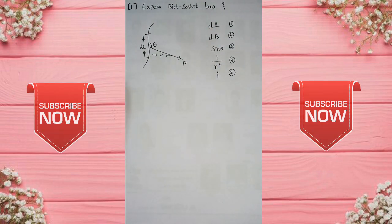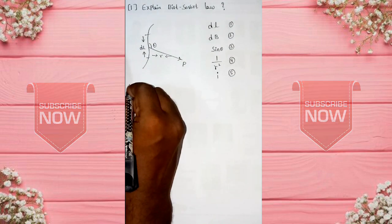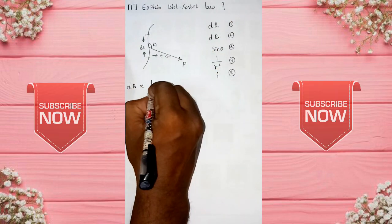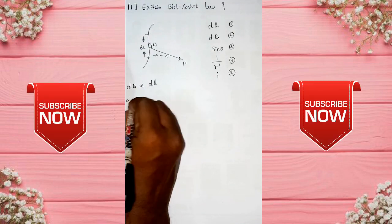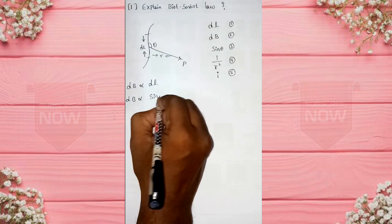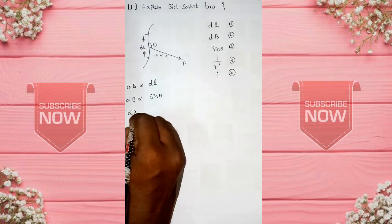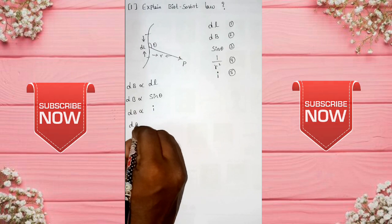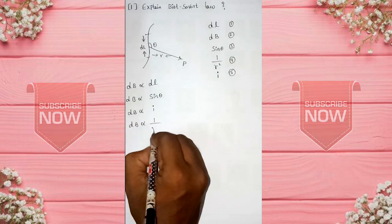If I was there, my derivation will be. Now, db is directly proportional to dl, db is directly proportional to sin theta, db is directly proportional to i, db is directly proportional to 1 by r square.